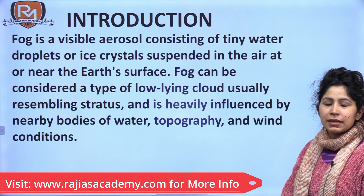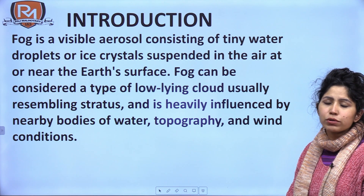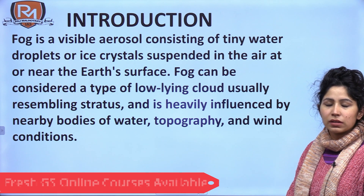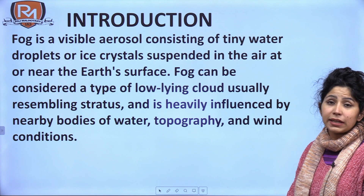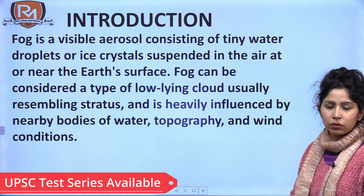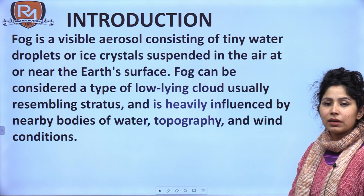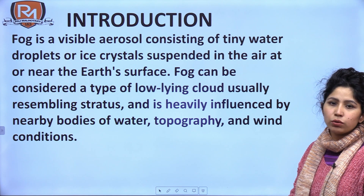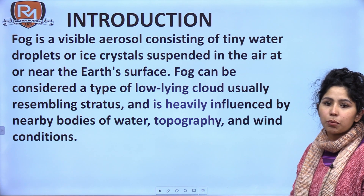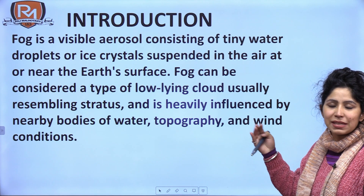Start by defining fog. Fog is a visible aerosol consisting of tiny water droplets or ice crystals suspended in the air at or near the earth's surface. That is a very technical definition — you are not giving a very basic kind of definition just to fill up words. This is the technical part of it. Now we will elaborate on this definition itself, explaining how fog is formed. It can be considered as a type of low-lying cloud, usually resembling stratus clouds, and is heavily influenced by nearby bodies of water, topography and wind conditions.